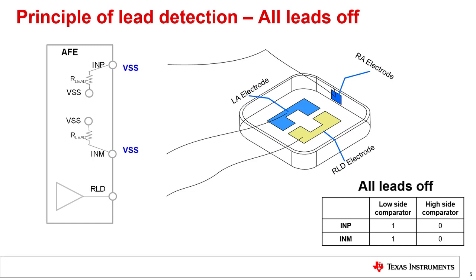To understand how DC lead detection works to distinguish between the three configurations, we will start with the case where all leads are off. Consider the case of resistor biasing the leads, where the bias resistor R-lead biases both INP and INM to VSS or ground. Since the leads are open and there is no other mechanism to set the bias on the pins, the voltages at the INP and INM pins are solely determined by the lead bias potential. Therefore, the voltage at both INP and INM pins is equal to 0 volts. By setting the high and low threshold voltages for the comparators to voltages within the range of VDD and VSS, a leads-off condition of both INP and INM leads can be determined.